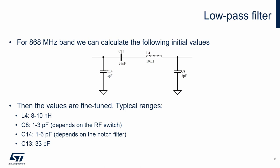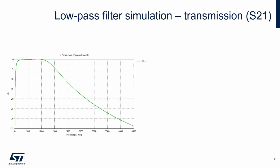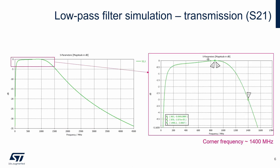Typical ranges of the real components are as follows. The values depend on neighboring blocks, PCB layout, etc. The DC block capacitor usually has a fixed value. Here we can see the simulated transmission of the low-pass filter only with ideal components. In the detailed view we can see that the transmission is best in the working band and the corner frequency is about 1400 MHz.